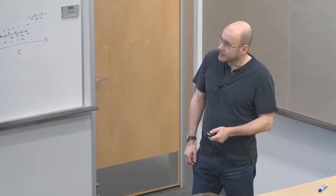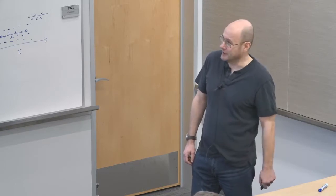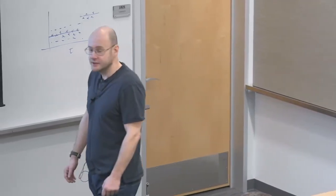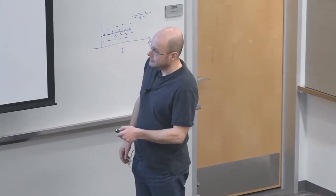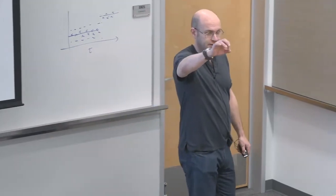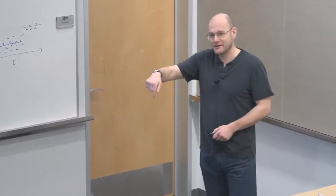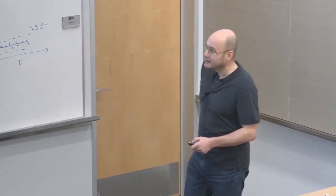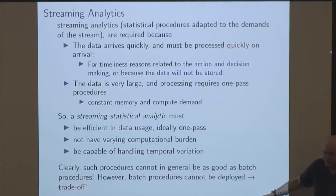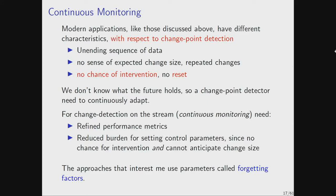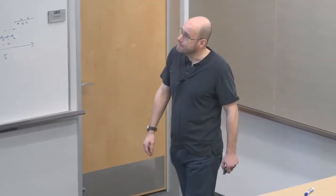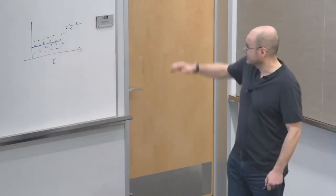To keep up with the data, what we need is constant memory, constant compute algorithms to do this sort of thing. I'm also interested in handling temporal variation — if the process is moving, I want to capture that, so I'll bring in an extra parameter. Continuous monitoring is change detection when you're going to do it forever — the analytic runs against a stream that's infinite. In that case, there's no sense of an expected change size, and there will be repeated changes forever.